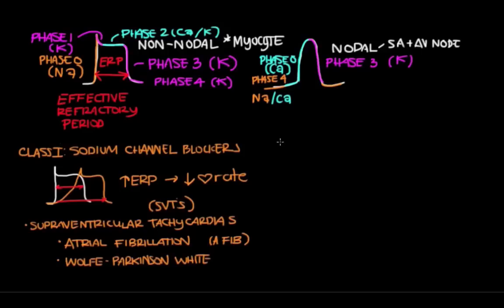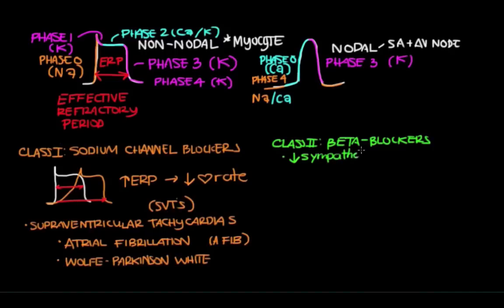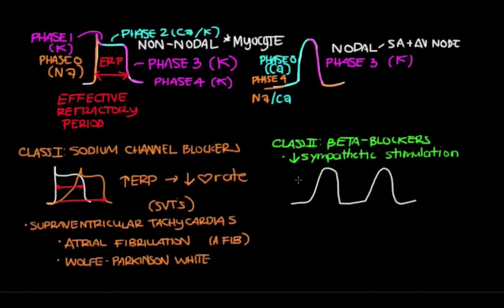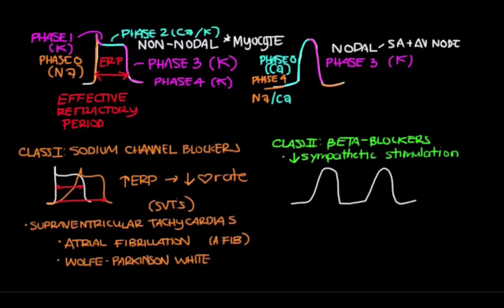The next class is class 2 antiarrhythmics — beta blockers. Beta blockers work by decreasing sympathetic stimulation; they block the beta-1 receptors at the SA and AV node. Sympathetics increase heart rate by increasing the slope of phase 4, so you're hitting threshold sooner and having more frequent depolarizations. Beta blockers work by blocking sympathetics, decreasing the phase 4 slope.